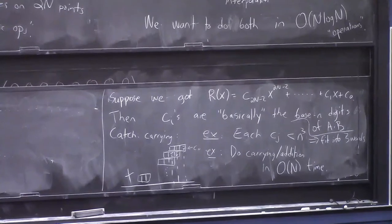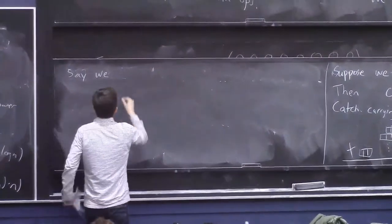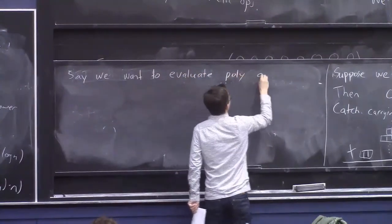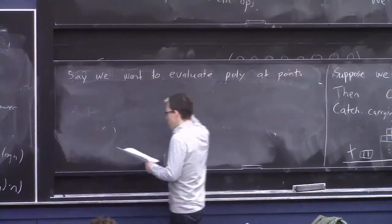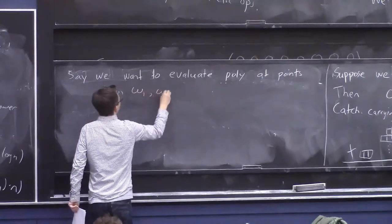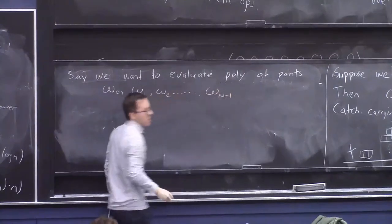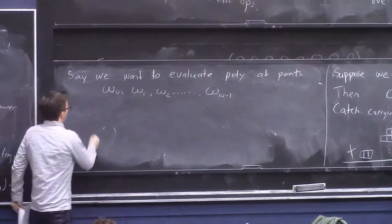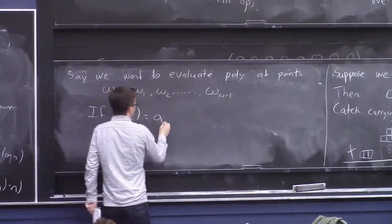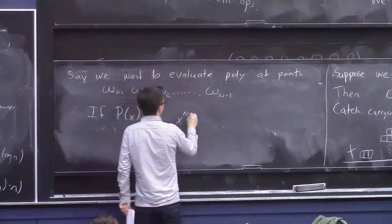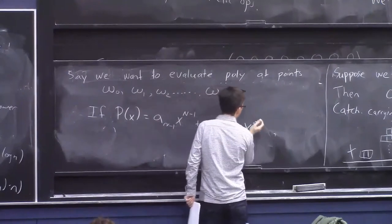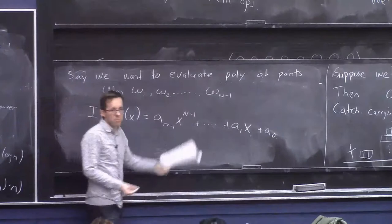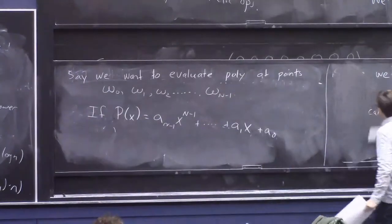So, let's think about this. And let's say we want to just do evaluation for now. Evaluation's the easier one to think about. So, we want to evaluate a polynomial at the points, instead of 1, 2, 3, 4 up to n, let's just say omega_0, omega_1, omega_2, up to omega_n minus 1, where these are some numbers to be chosen later. And if you've seen this before, it's not a coincidence that I used the letter omega. All right. So, if this polynomial p of x looks like this, a_n minus 1 x to the n minus 1 plus dot dot dot plus a_1 x plus a_0. So, say this is our polynomial, and we want p's values on these n numbers.